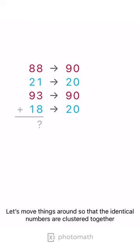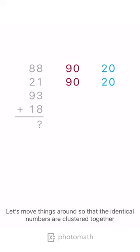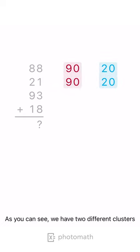Let's move things around so that the identical numbers are clustered together. As you can see, we have two different clusters.